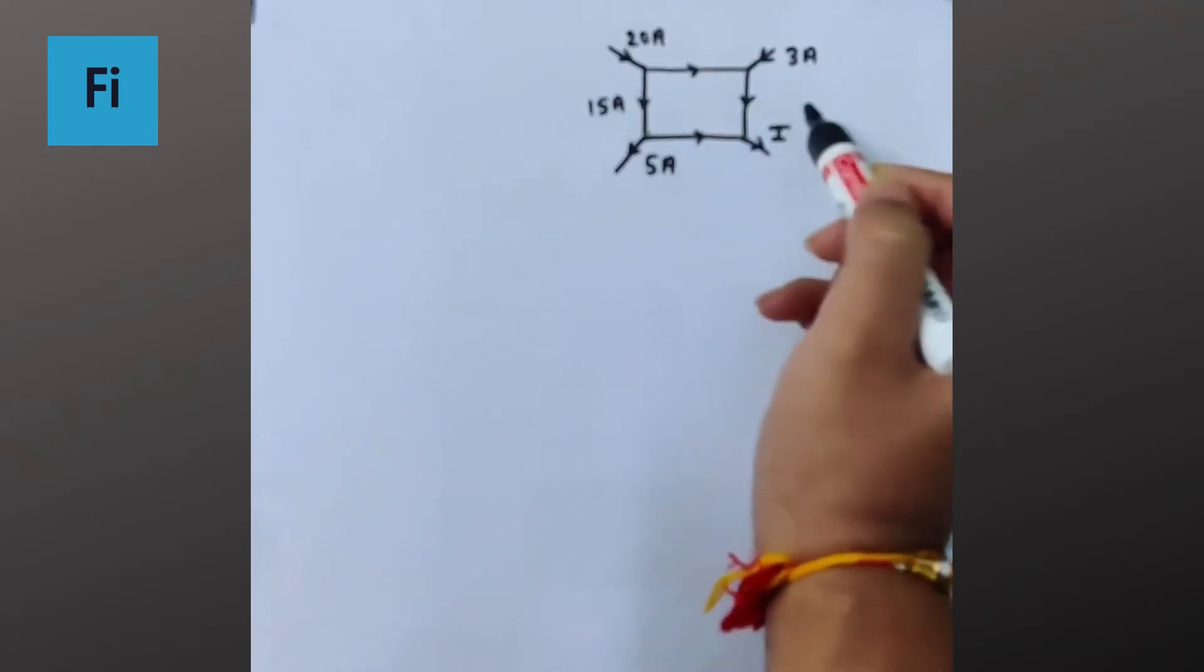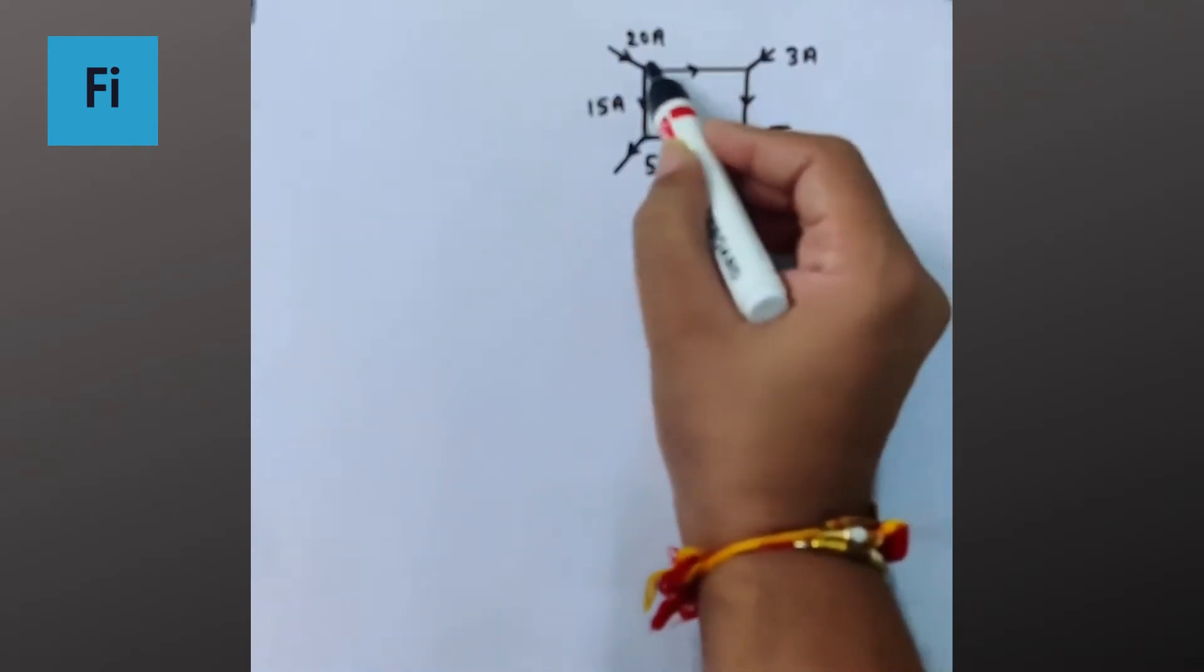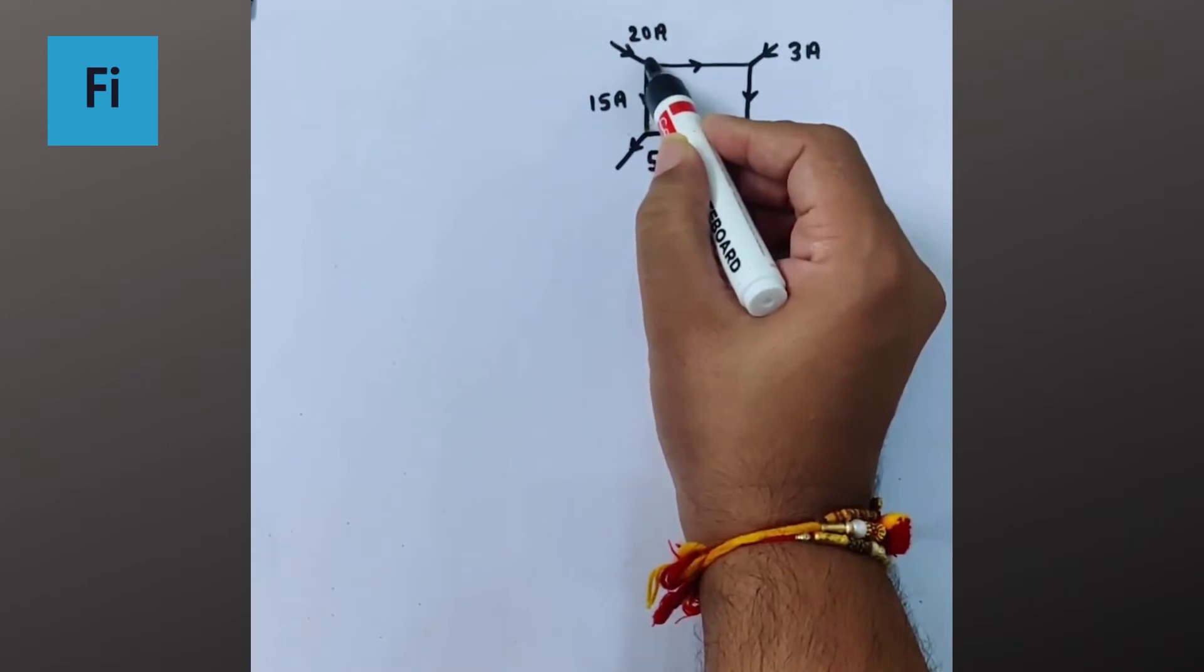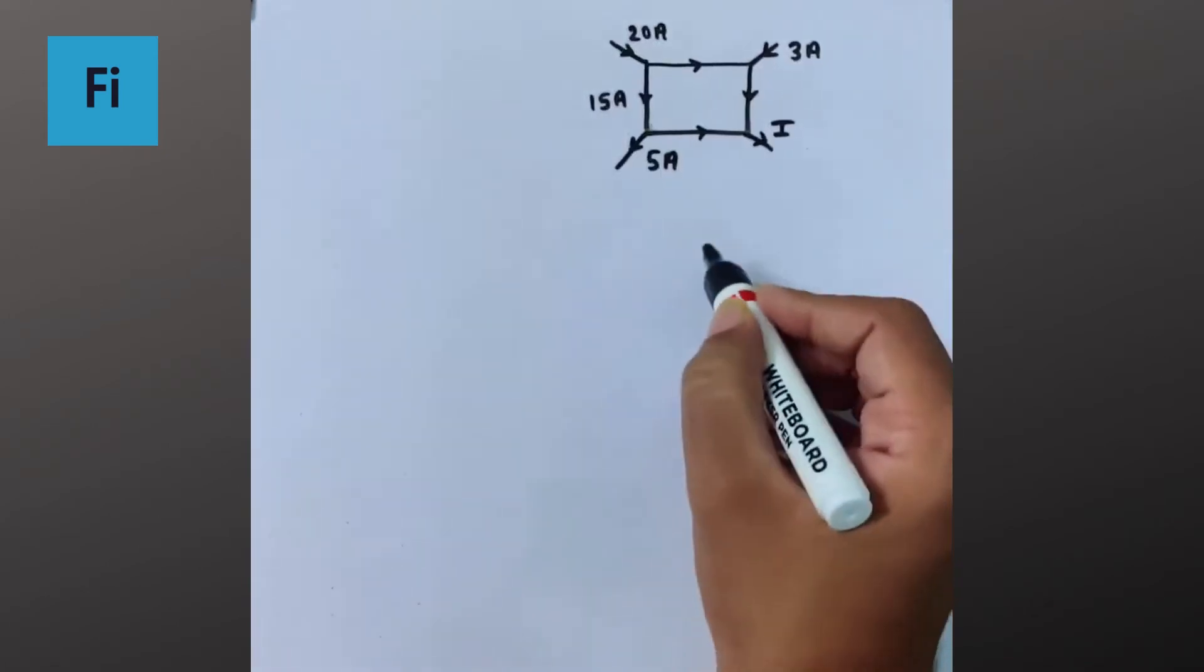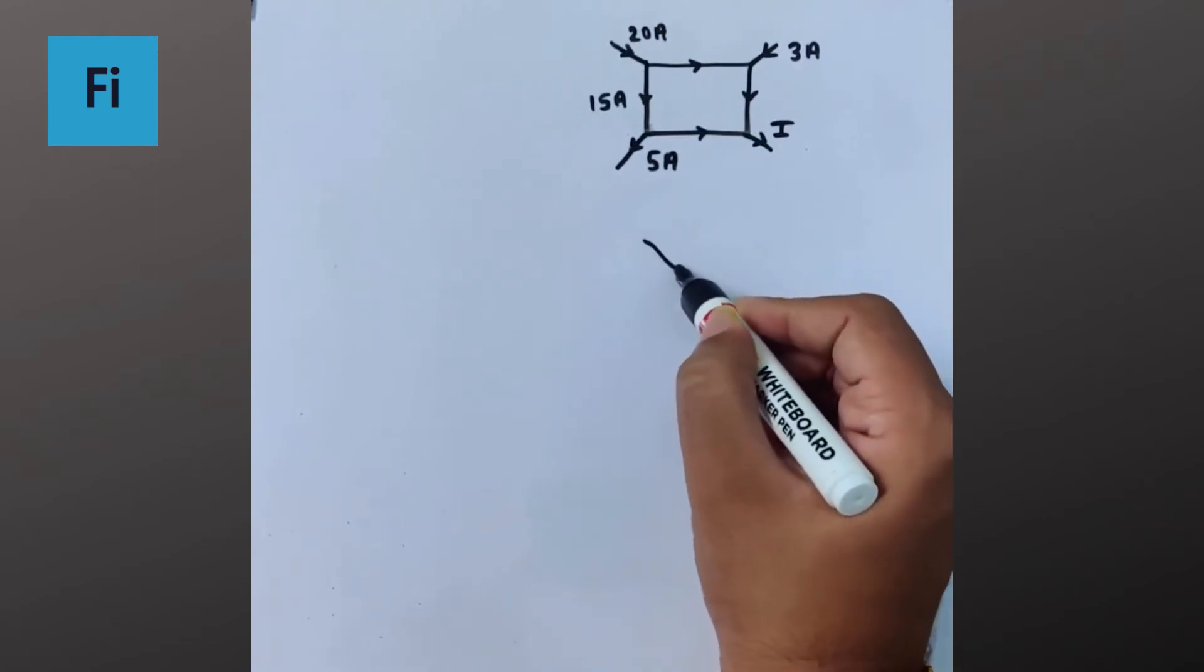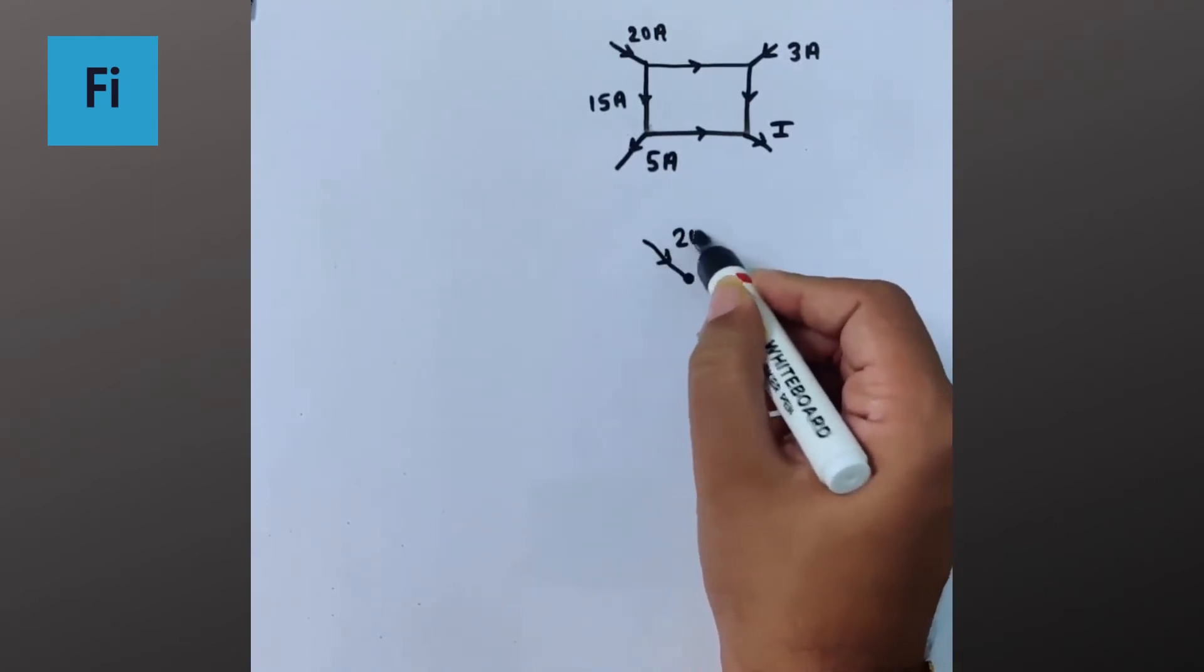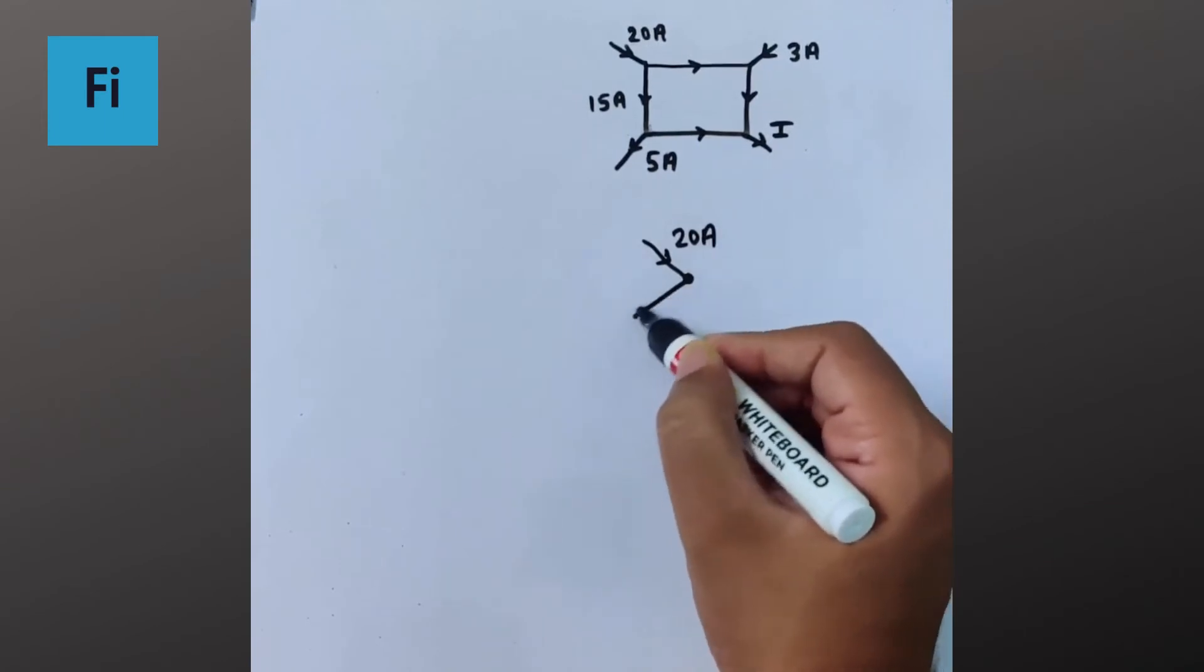So we don't need to apply KCL, Kirchhoff's Current Law, at individual points. Instead we can assume this circuit like this: that 20 amperes is coming, 5 amperes is moving out, 3 amperes is coming, and i is moving out.